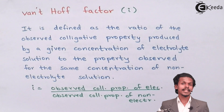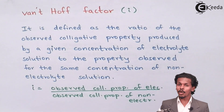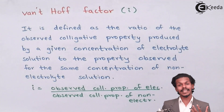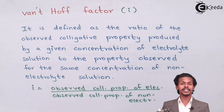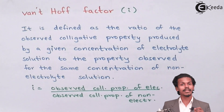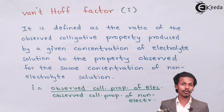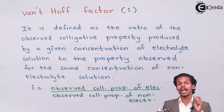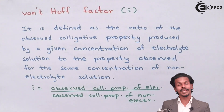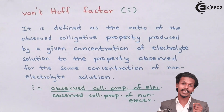Since we know that the abnormality arising because of association and dissociation plays a very pivotal role in the calculation and determination of colligative properties, let us see what the Van't Hoff factor is and how it relates to each and every colligative property, one by one, in depth.